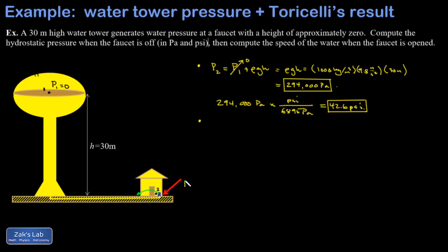So now at this point, P2 is going to be equal to zero. And then our strategy, of course, is to apply Bernoulli's equation.